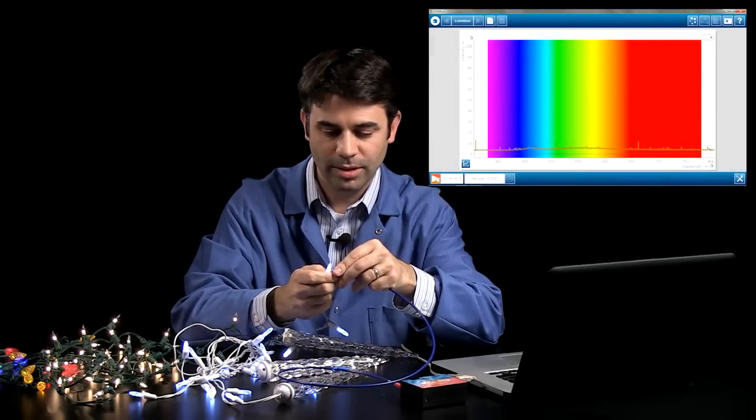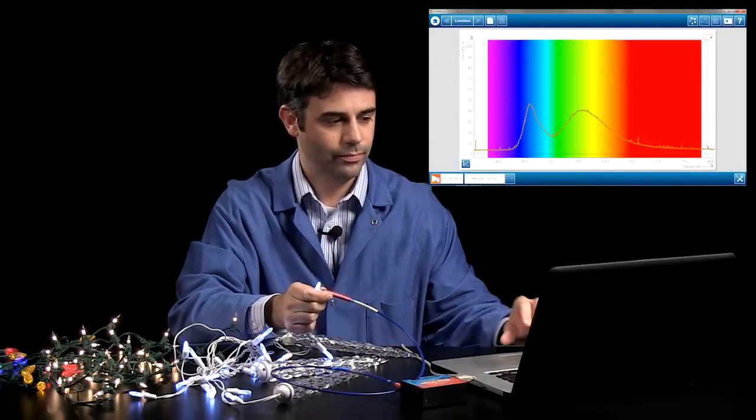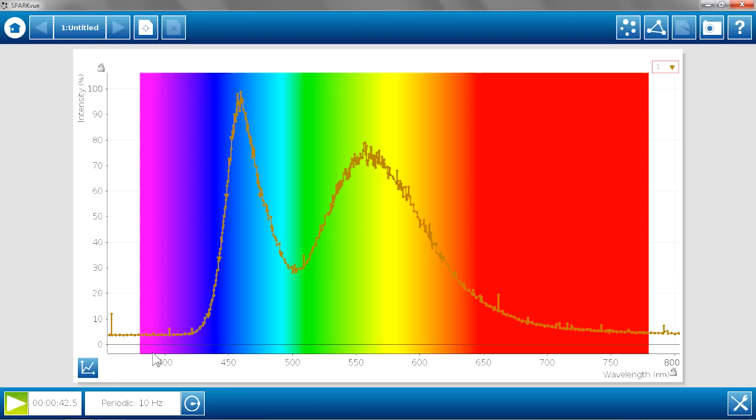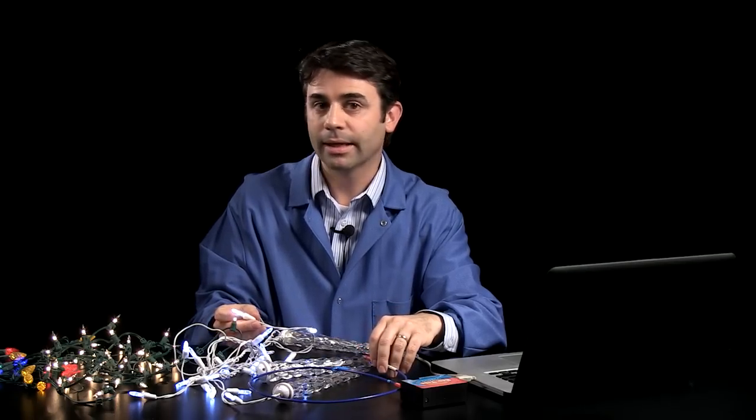And we'll use the spectrometer again with the fiber optic cable. And there we go. Not the same broad spectrum. Sort of a peak in the blue area and then another peak in the yellow-green area. Giving a different color signature than the incandescent bulb.